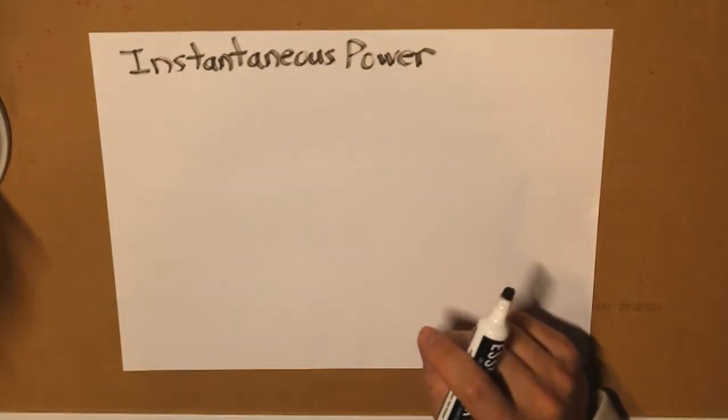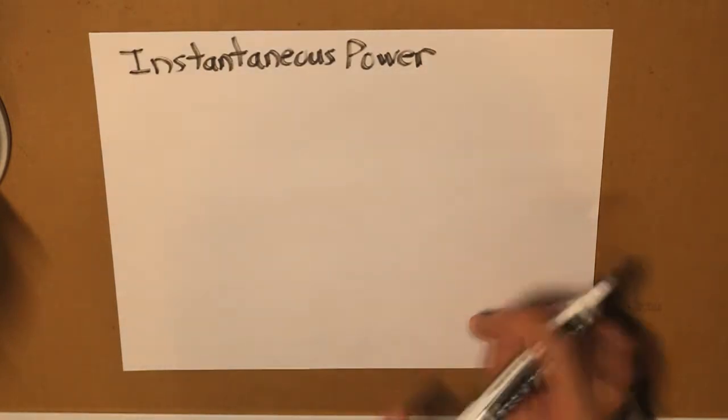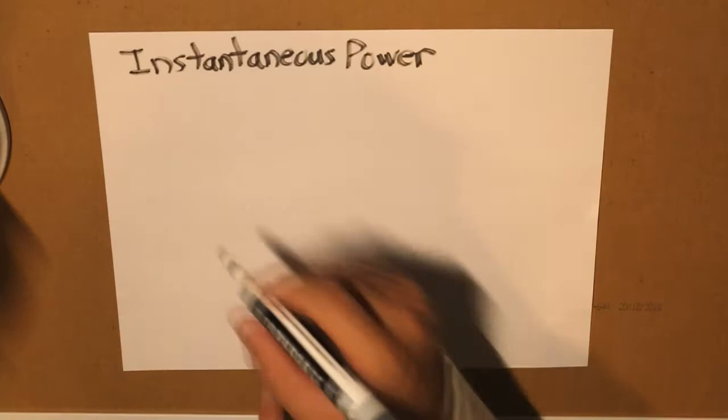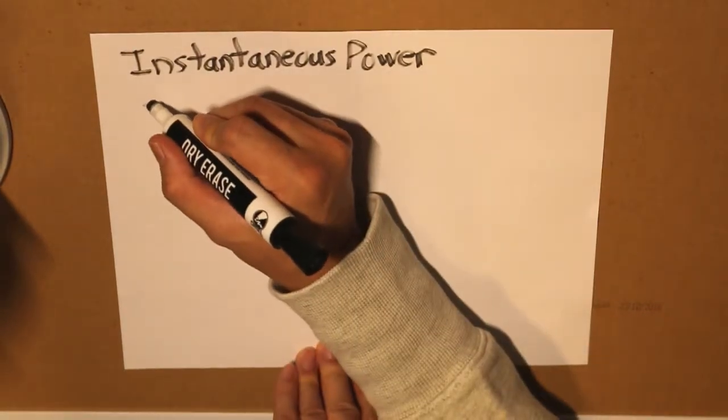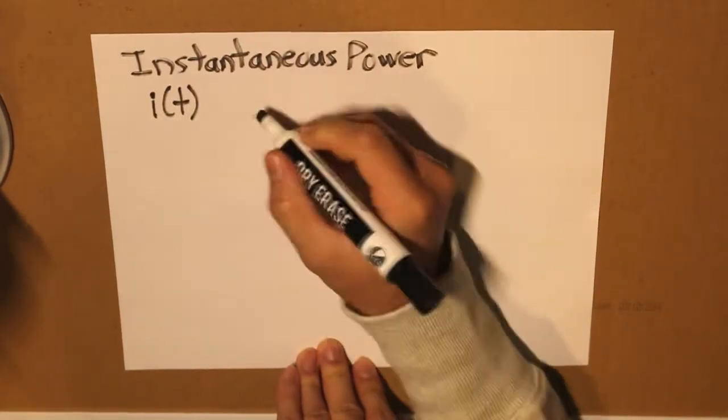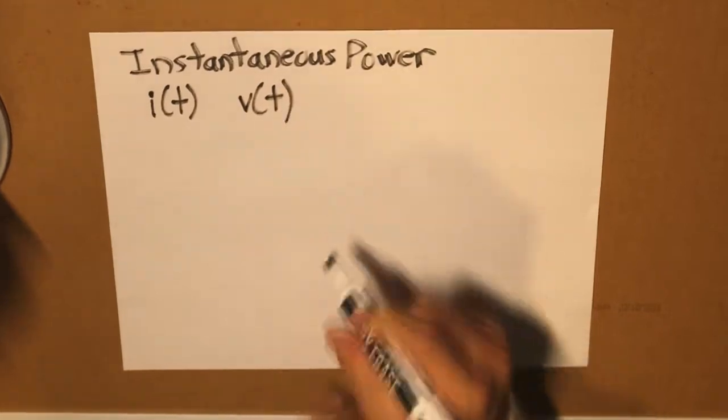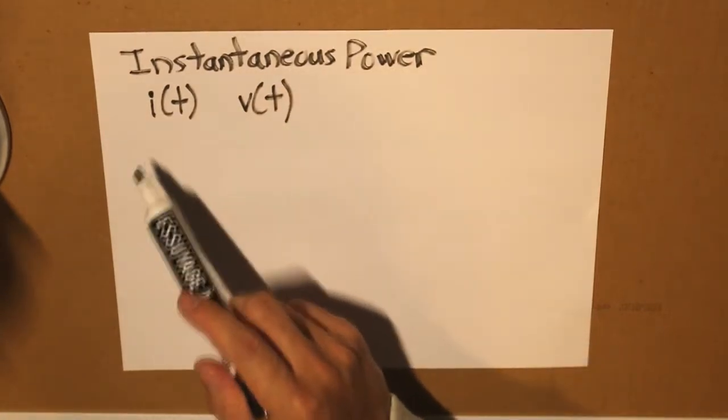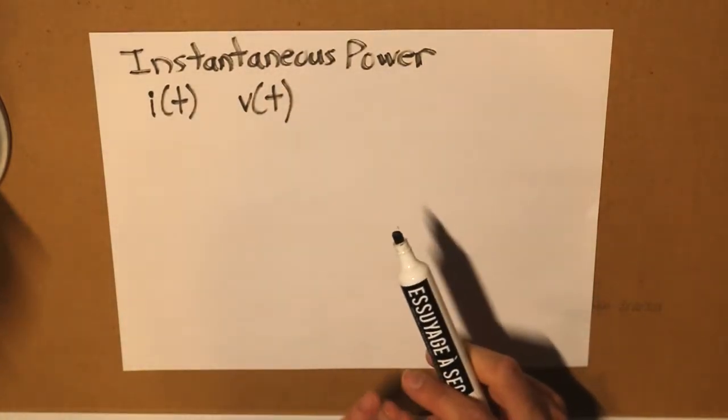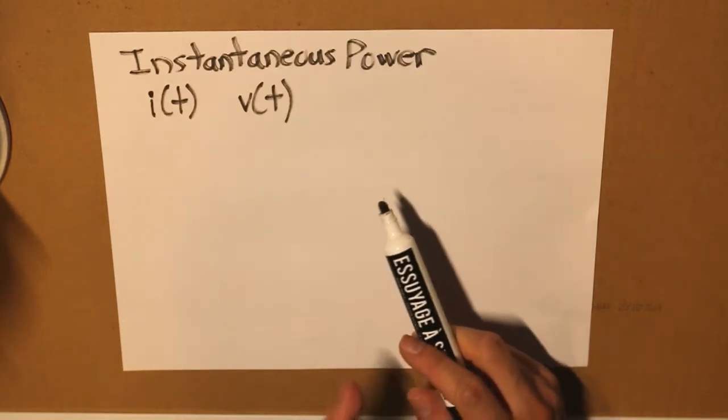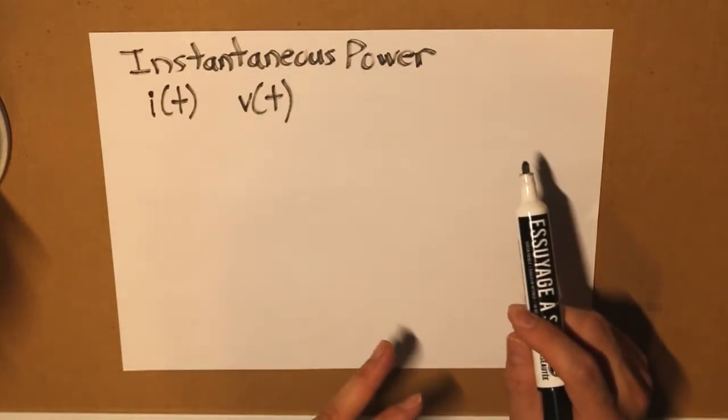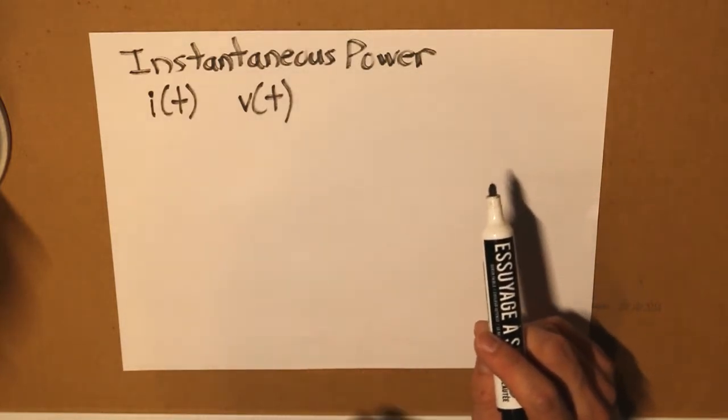Instantaneous power is the power that can be determined at any given period of time. And given the knowledge of I(t) and V(t), we can take both of these terms to determine our instantaneous power, which can also be defined as our AC power.